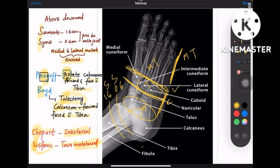To recap: Sarmiento and Cymes go together; Pirogov and Boyd relate to calcaneum — Boyd involves both talus and calcaneum; Chopart is 'chota,' meaning between the tarsal bones; and Lisfranc is long, meaning at the tarsal-metatarsal junction.